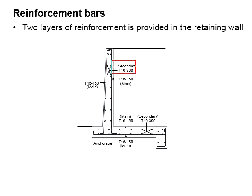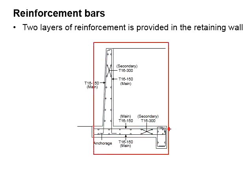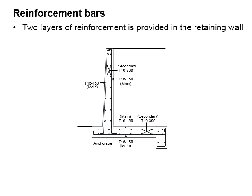As for the secondary reinforcement, a minimum amount of reinforcement bar may be provided. While providing reinforcement bars to the retaining wall, it is essential to also check for serviceability considerations such as the maximum and minimum reinforcement bar area, as well as the maximum spacing between the reinforcement bars.